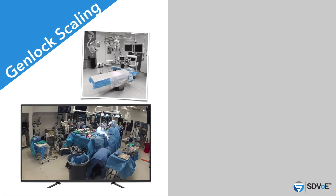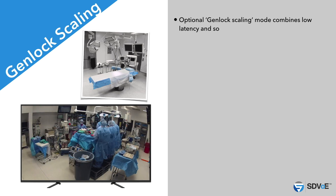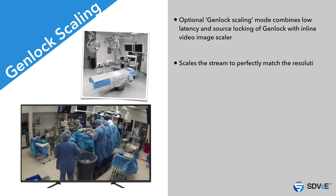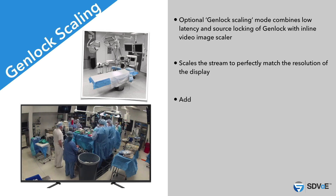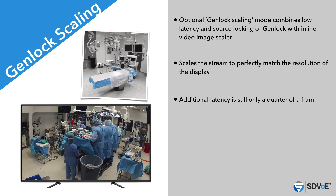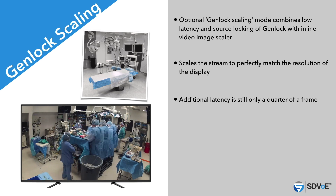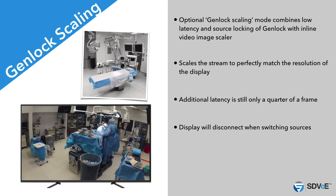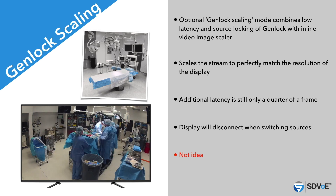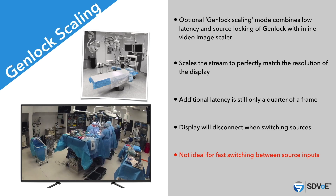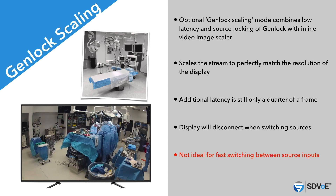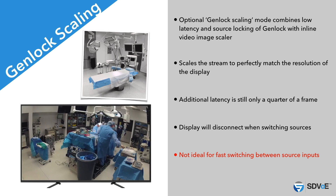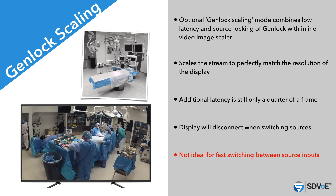Additionally, the genlock scaling mode combines the benefit of genlocking with the advantage of scaling a stream to perfectly match the resolution of the display. While genlock scaling adds a small amount of latency, it is still only around a quarter of a frame. It is important to note that since the display is synchronized to the source, it will disconnect when switching to another source — just like switching your TV from one source to another, you will generally experience a brief blank image while the display synchronizes with the new source.